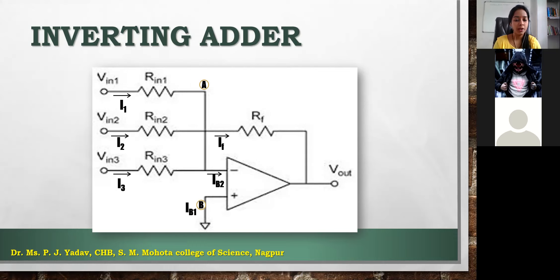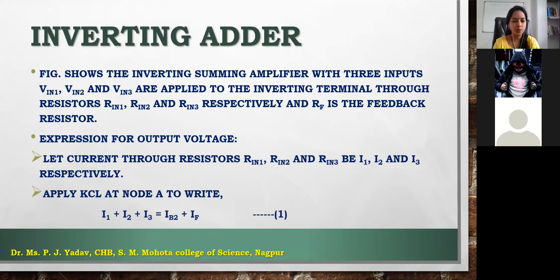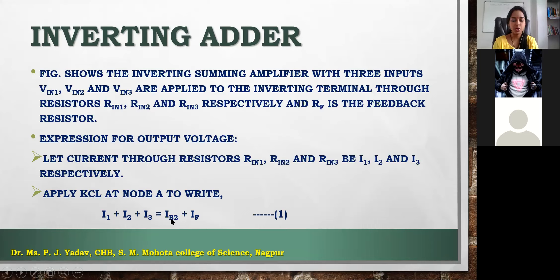We have two terminals, terminal A and terminal B. IB1 is the current at terminal B. To analyze the adder, we will apply KCL — Kirchhoff's current law — because we have three different currents at the node. The KCL equation gives us: I1 + I2 + I3 = IB2 + IF, where IF is the feedback current and IB2 is the current at node B. The summation of all currents gives the final current at point A.